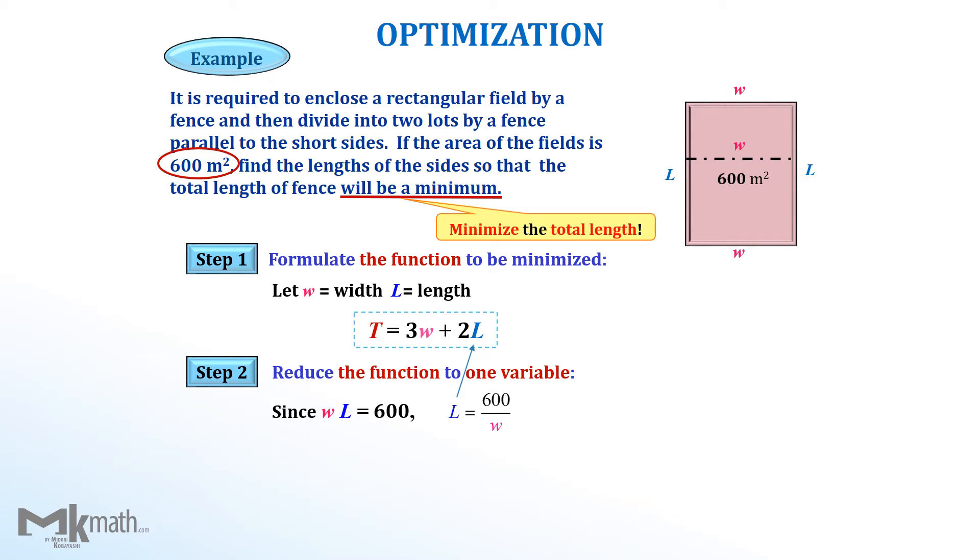Now, substitute L as 600 over W into the objective function in step 1 to get the total function as t equal 3w plus 2 times 600 over W. Simplifying the function to get t equal 3w plus 1,200 over W.